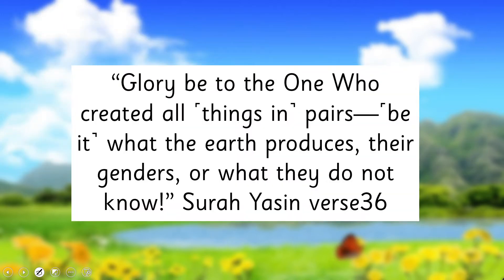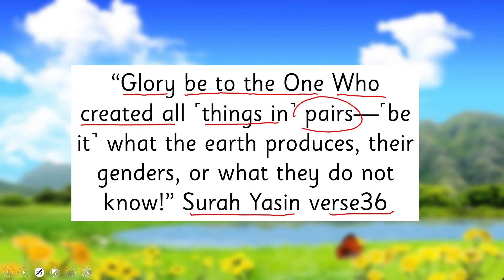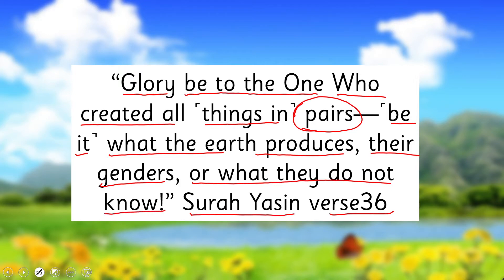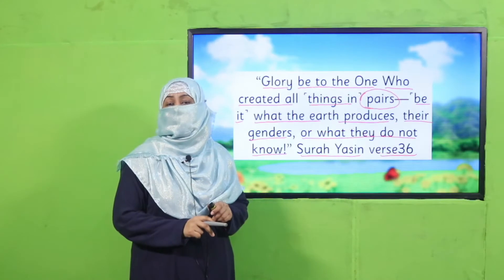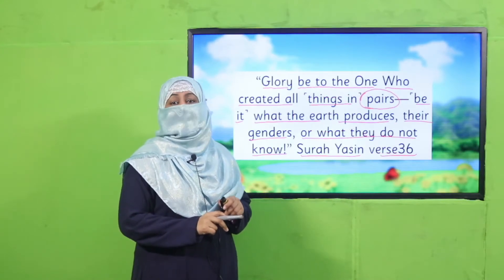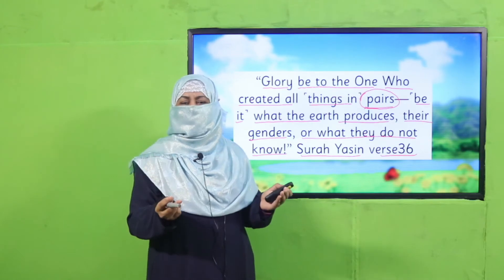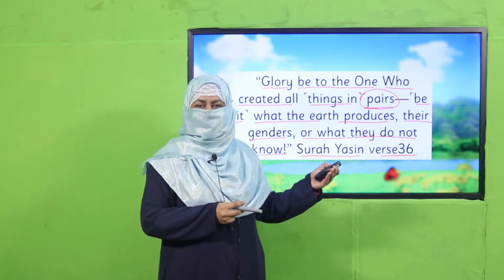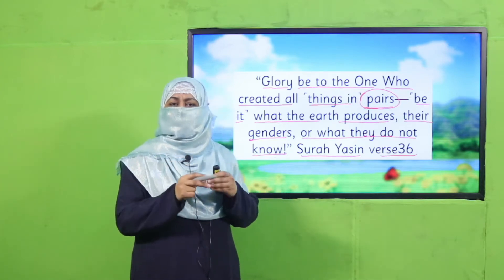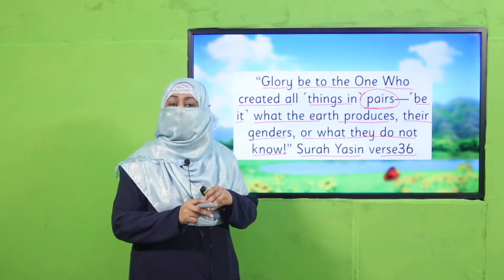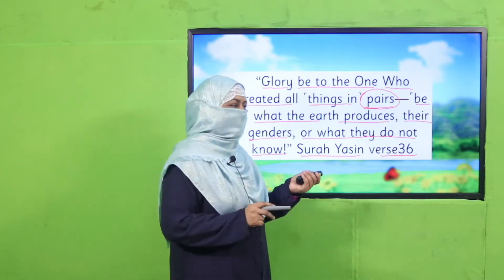Let's start with the name of Allah Subhanahu wa Ta'ala. Allah mentions in the Quran, Surah Yaseen, verse 36: 'Glory be to the one who created all things in pairs, be it what the earth produces, their genders, or what they do not know.' Subhan Allah — Allah Subhanahu wa Ta'ala is telling us that He has created pairs. A pair means a mama and a baba. Whatever Allah has created in pairs, they grow in their generations — this is how the earth grows for all creations.